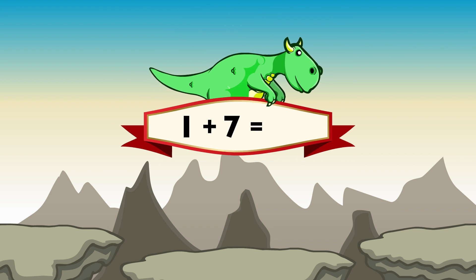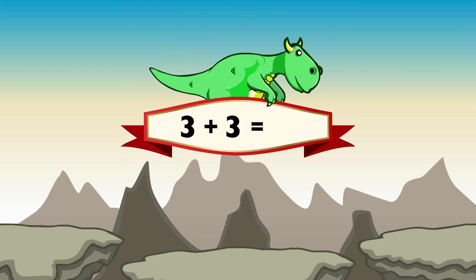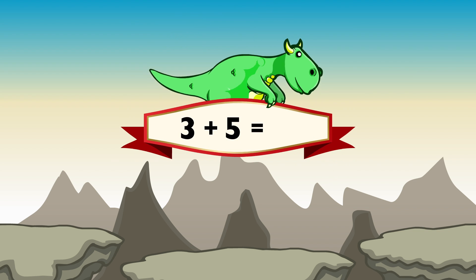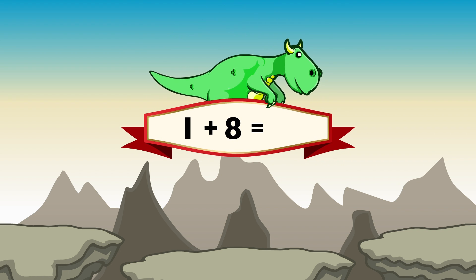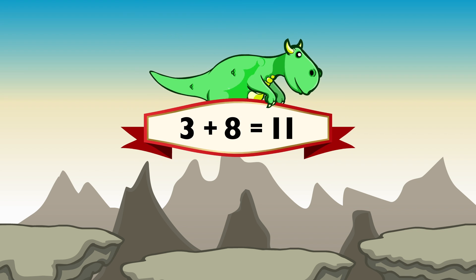1 plus 7 equals 8. 2 plus 4 equals 6. 3 plus 3 equals 6. 1 plus 2 equals 3. 3 plus 5 equals 8. 4 plus 4 equals 8. 1 plus 8 equals 9. 4 plus 7 equals 11. 3 plus 8 equals 11.